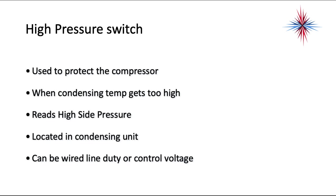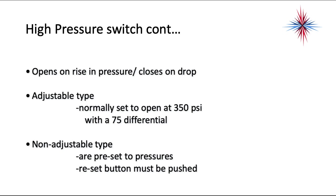First of all, we have a high pressure switch. It's used to protect the compressor. When the condensing temperature gets too high, it causes high pressures and it opens the Y to the compressor contactor. It reads high side pressure. It's located in the condensing unit and it can be wired line duty or control voltage. Most often they are wired control voltage on the compressor contactor. The high pressure switch will open on a pressure rise and close on a pressure drop. Normally they're set to open at 350 PSI with a 75 PSI differential.